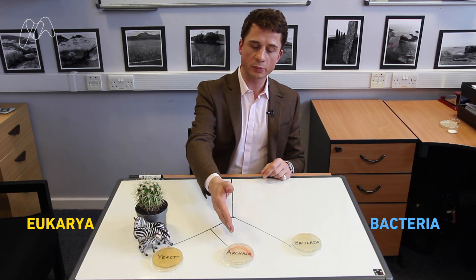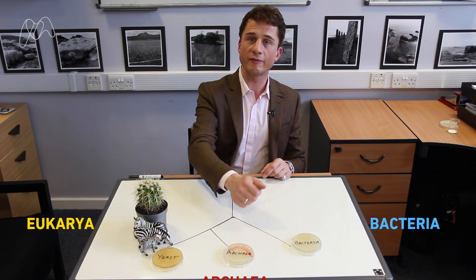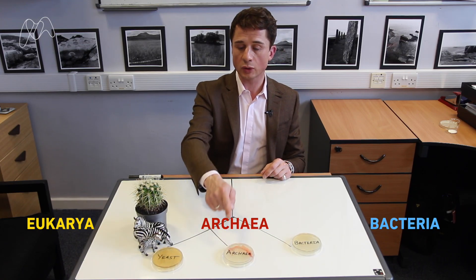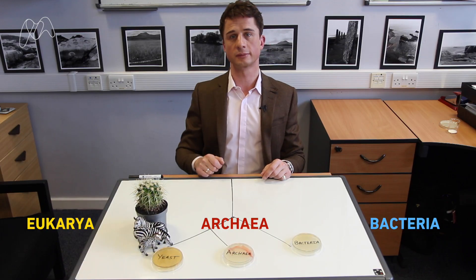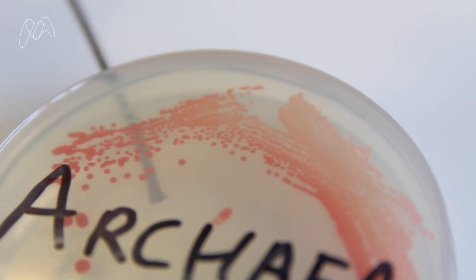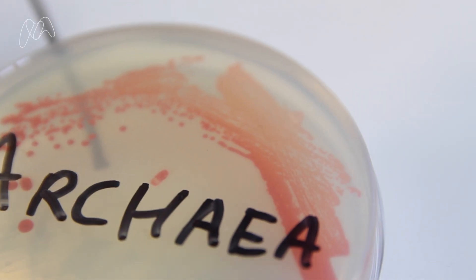Even though Archaea look superficially similar to bacteria, they're very different — in fact, they're more closely related to eukaryotes. Archaea is something of a mystery in microbiology. Their name comes from the Greek for 'old ones.' Since their discovery, the more we've learnt about Archaea, the more they've continued to puzzle us.